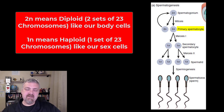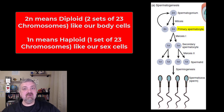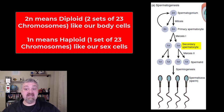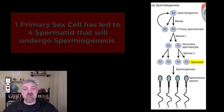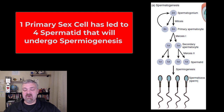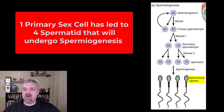The 2N designation means these cells are diploid — they have two sets of chromosomes, which you want for all your somatic or body cells, but not for your sex cells. Then this primary spermatocyte undergoes meiosis to become two secondary spermatocytes, which are haploid, meaning they have only one set of chromosomes. They undergo another round — meiosis 2 — and now we have four spermatids. So one primary sex cell becomes four spermatids, which then undergo spermiogenesis. This process from spermatogonia to a functional sperm takes about 64 days.